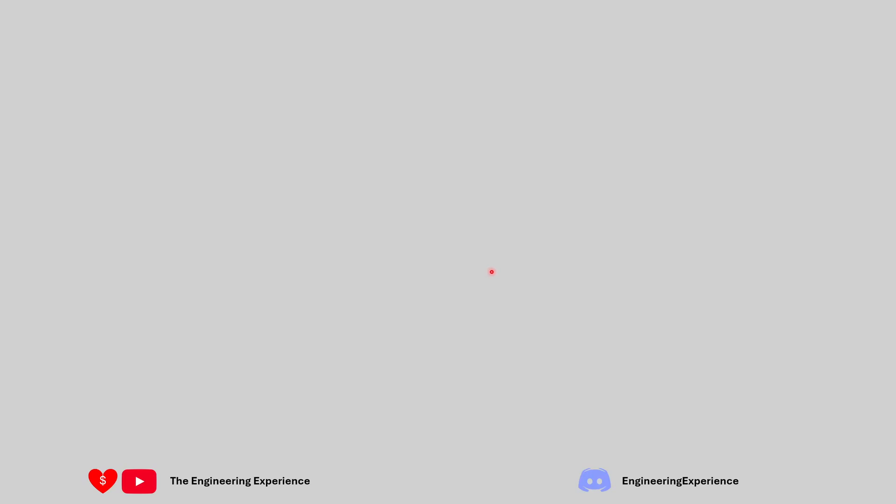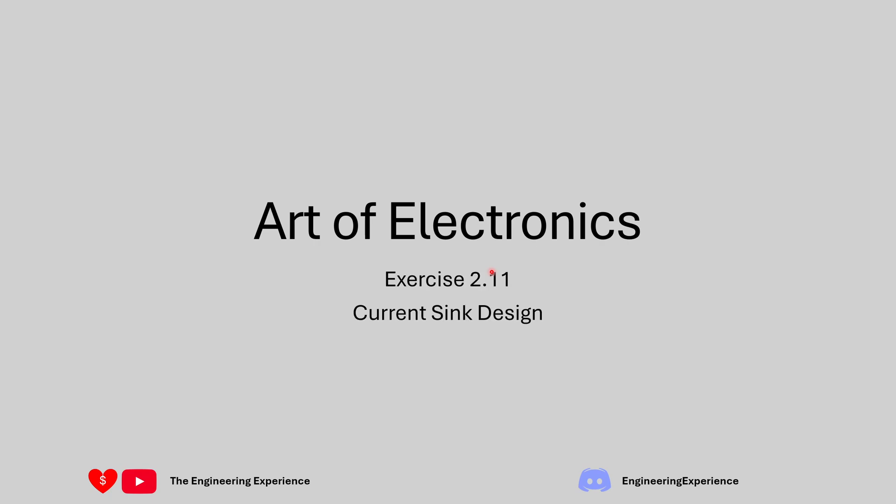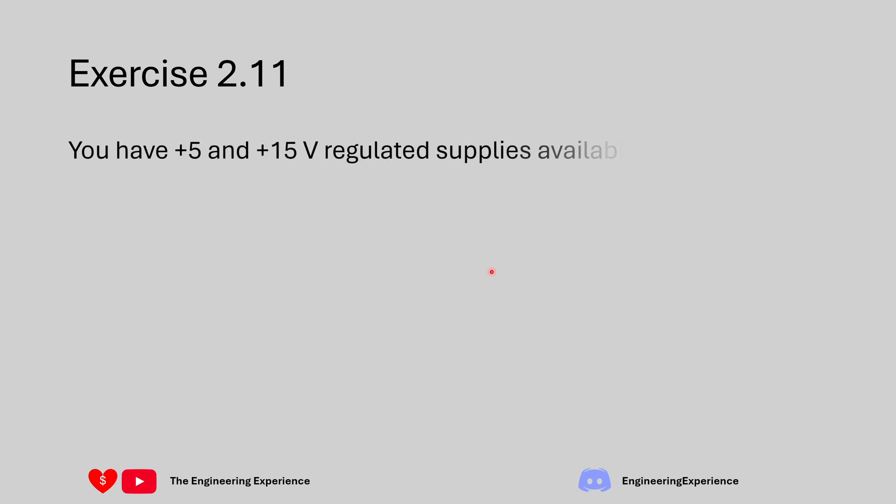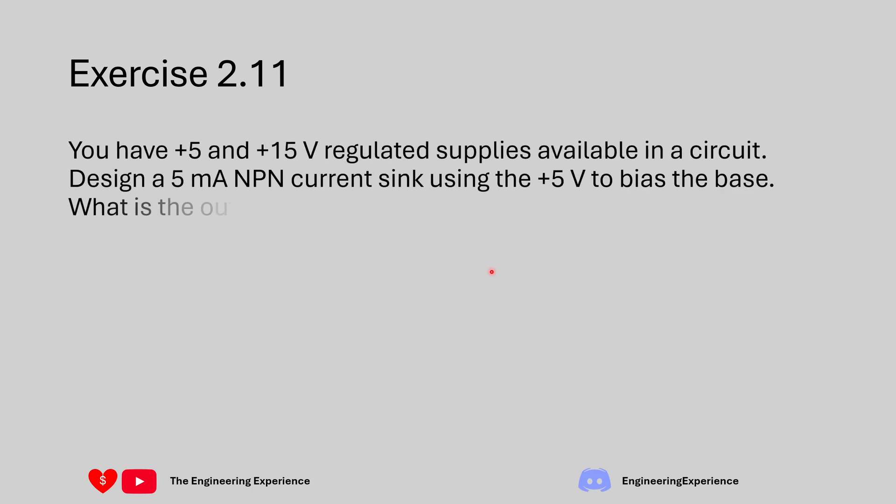Hello and welcome back. In today's video I'm going through exercise 2.11 from the Art of Electronics. In this exercise we need to design a current sink using an NPN transistor. The question says you have a plus 5 and plus 15 volt regulated power supply available, and we need to design a 5 milliamp NPN current sink, using the 5 volt supply to bias the base. The last part of the question asks what the output compliance is. I'll explain what an NPN current sink circuit looks like, calculate the required components, and briefly explain output compliance.